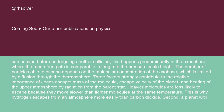Three factors strongly contribute to the relative importance of Jeans escape: mass of the molecule, escape velocity of the planet, and heating of the upper atmosphere by radiation from the parent star. Heavier molecules are less likely to escape because they move slower than lighter molecules at the same temperature. This is why hydrogen escapes from an atmosphere more easily than carbon dioxide.